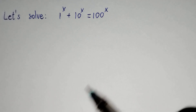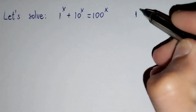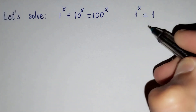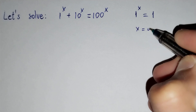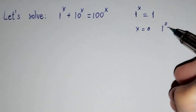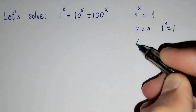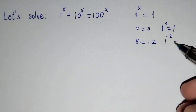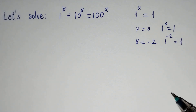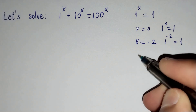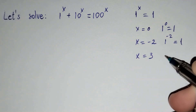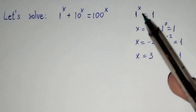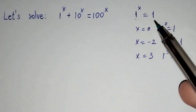Firstly, we know that 1 power x always equals to 1. For example, if x equals to 0, then 1 power 0 equals to 1. If x equals to negative 2, then 1 power negative 2 equals to 1. If x equals to 3, then 1 power 3 equals to 1. That's why 1 power x always equals to 1.